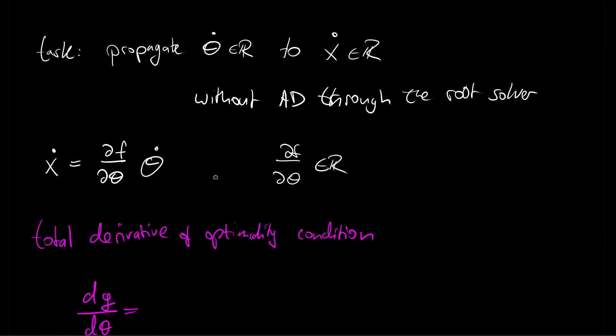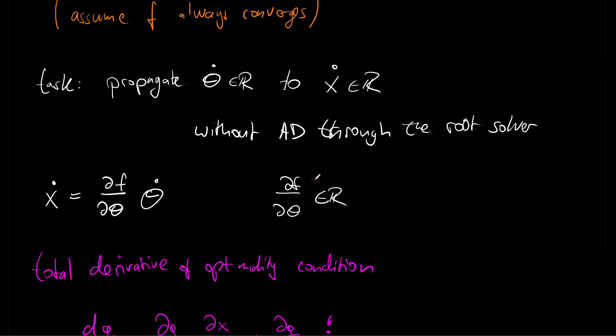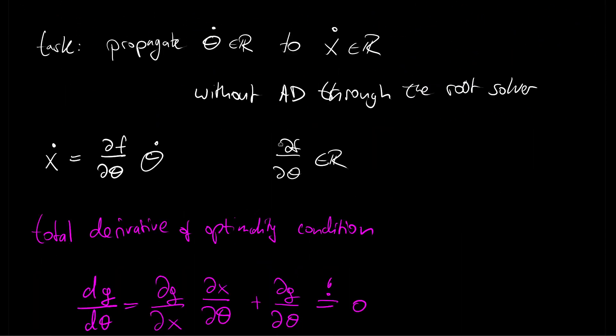So in a sense, we are getting the derivative of g with respect to x multiplied with the derivative of x with respect to theta. And then we of course have the explicit dependency of g with respect to theta. This total derivative holds to zero. And the reason for that is, our optimality condition is supposed to be zero. So the total derivative of something that is zero everywhere for its inputs is also zero. So this total derivative vanishes.